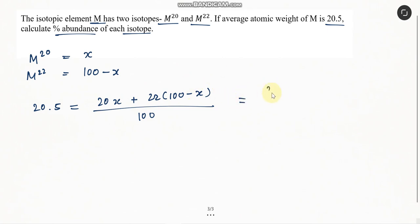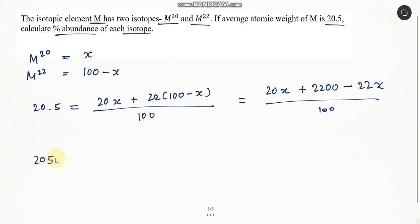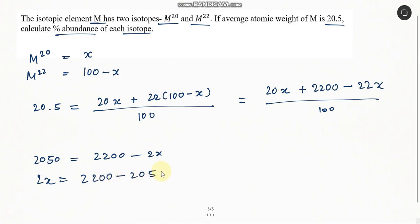Simplify this: 20x plus 2200 minus 22x, divided by 100. So 2050 is equal to 2200 minus 2x. So 2x will be equal to 2200 minus 2050, that gives us 150. That gives us x is equal to 150 by 2, that is 75.